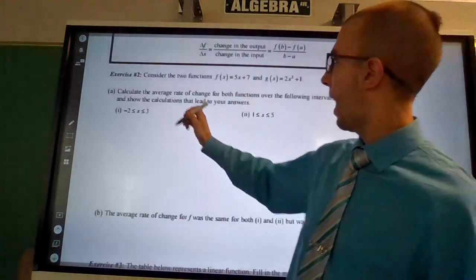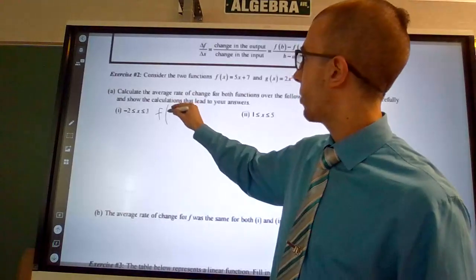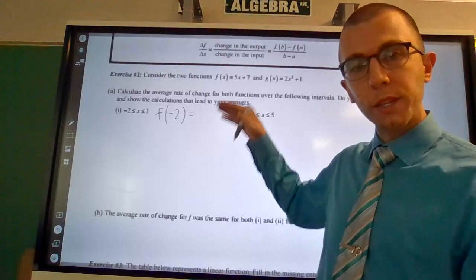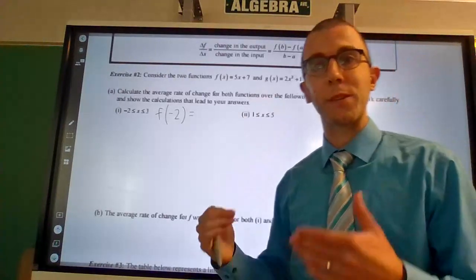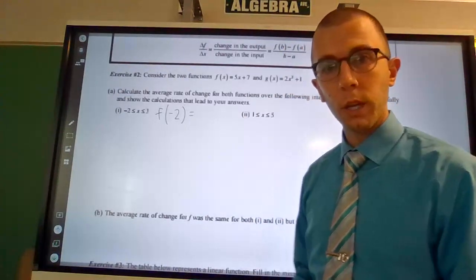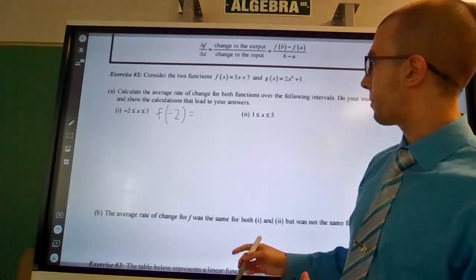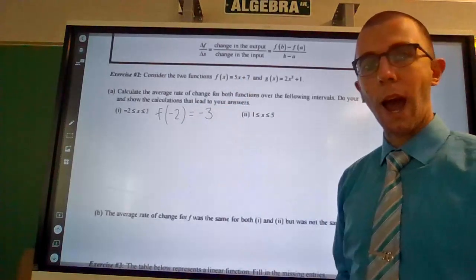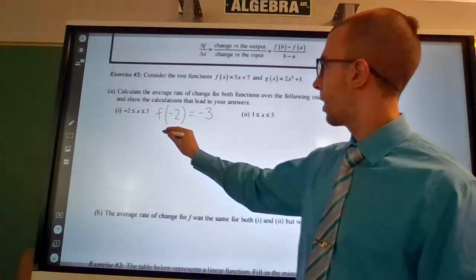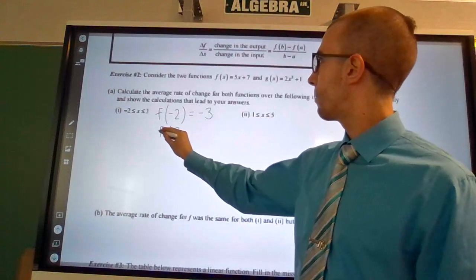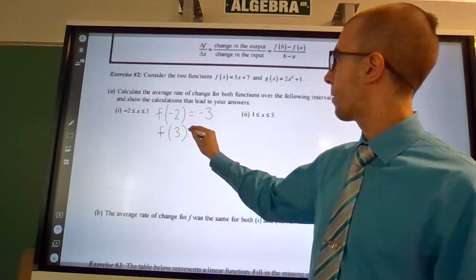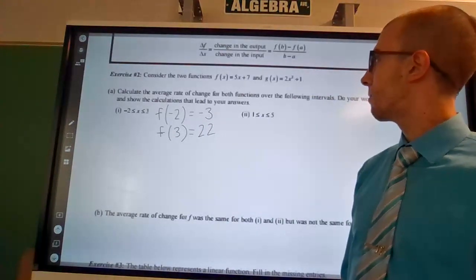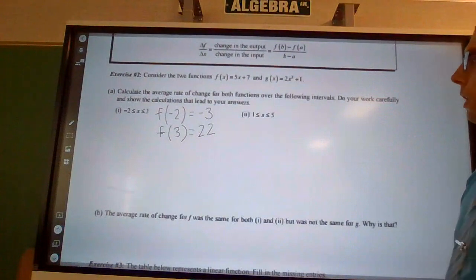Now I'm going to start with my f of x. So I want to first evaluate f of x for negative 2. I'm not going to show the process of substituting to evaluate because we've done that so many times before, so I'm just going to skip a couple steps. But when I evaluate negative 2 here, I get an output of negative 3. When I evaluate for x equals 3, f of 3, I get an output of 22.